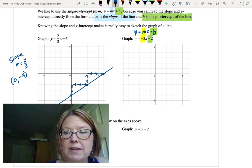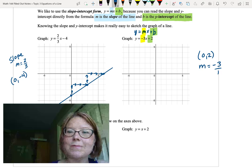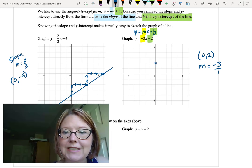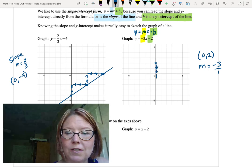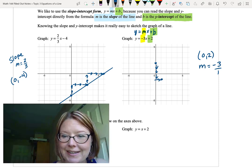That y-intercept is a point, 0 comma 2. Our slope is negative 3 or negative 3 over 1, so that we have both a rise and a run. We start by graphing our point at 0, 2, and then our slope will go down 3, 1, 2, 3, and then to the right, 1 unit, giving us a point at 1 comma negative 1.